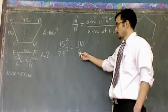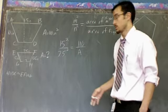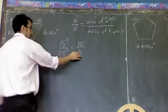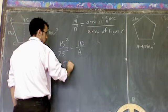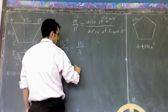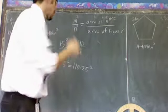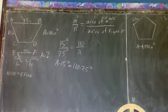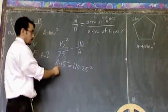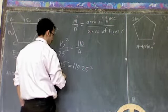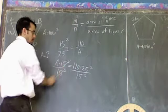At this point, you're solving for a variable with a proportion. You can solve it with cross multiplication. A times 15 squared should equal 110 times 7.5 squared. And after that, all you have to do is divide by 15 squared to solve for it.